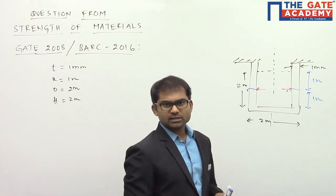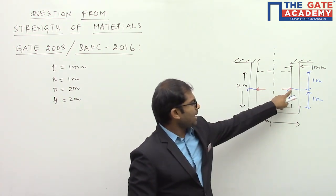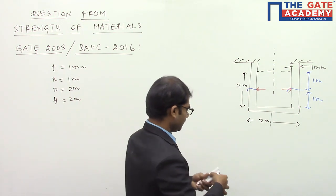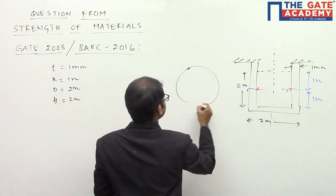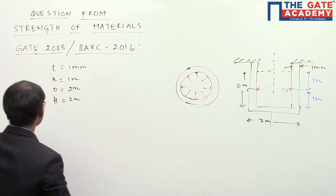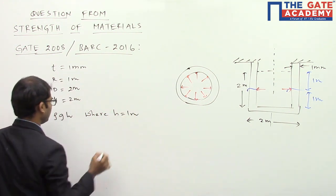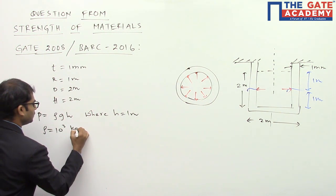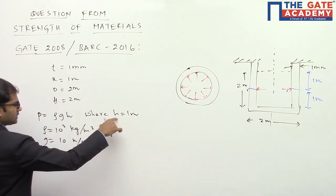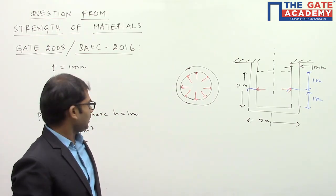The circumferential stress is produced by the pressure acting on the circumference. At the cross-section at mid-height, we calculate pressure as p = ρgh, where h = 1 meter, ρ = 1000 kg/m³, and g = 10 m/s². This gives us the pressure value at mid-height.